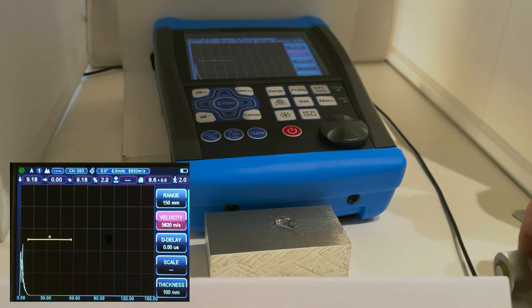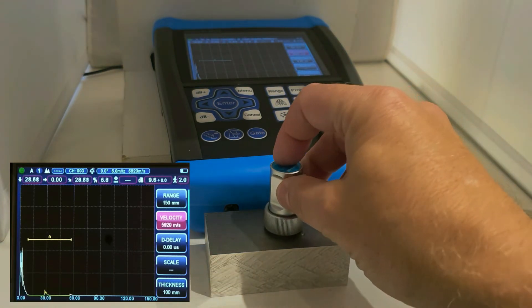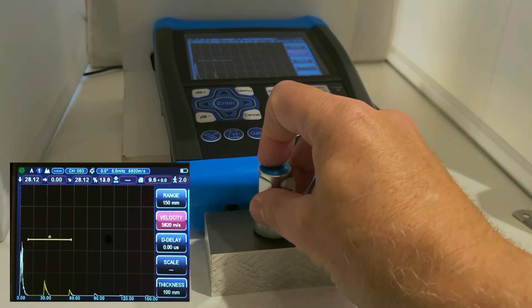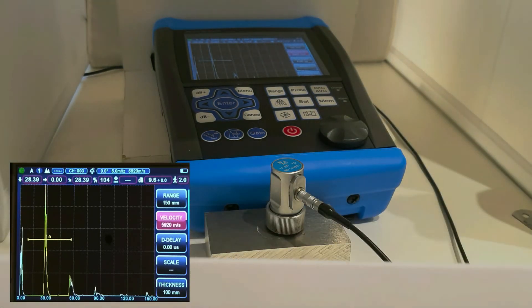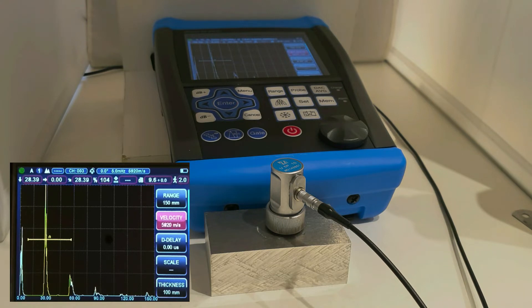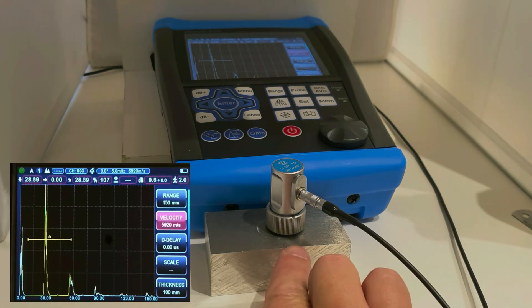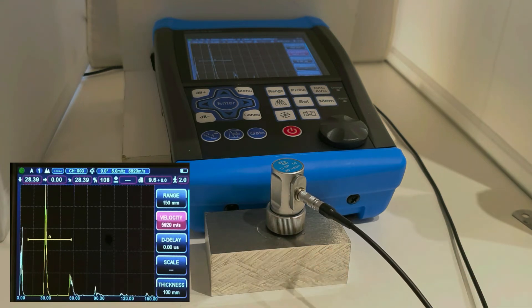If we now acoustically connect the probe to the test piece, we can see a signal on the screen. An ultrasonic wave is now transferred into the test piece through the couplant. This ultrasonic wave propagates perpendicular in the test piece, perpendicular into the test piece until the ultrasonic wave reaches the back wall of the test piece.